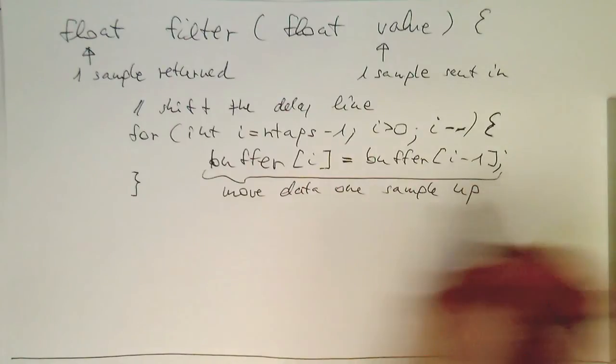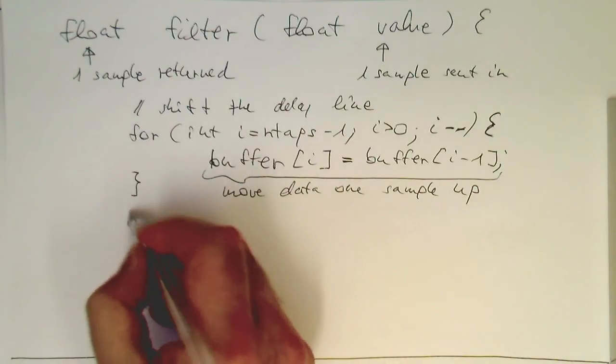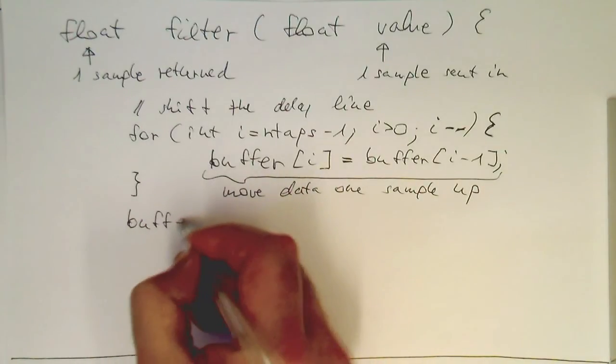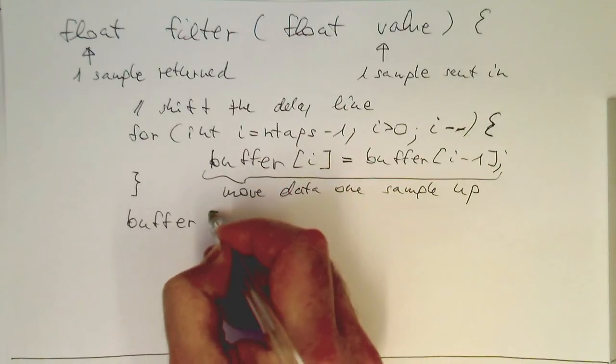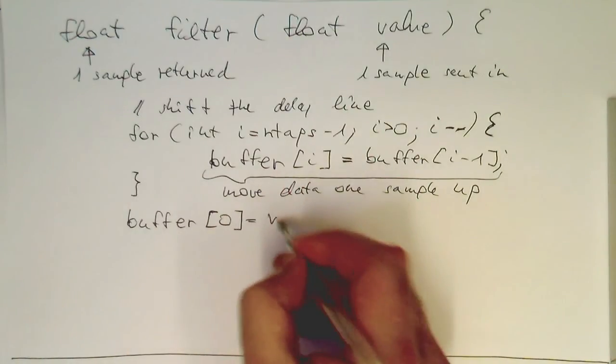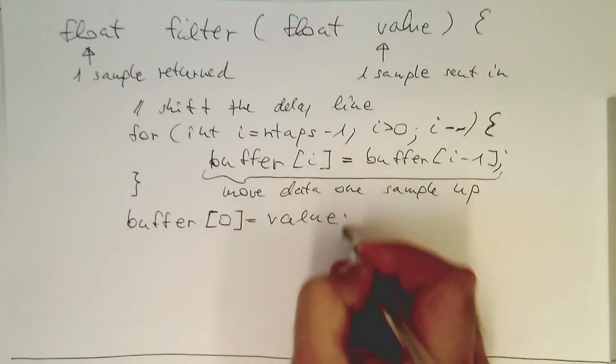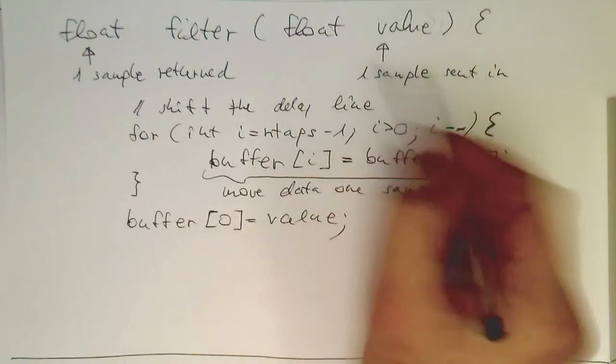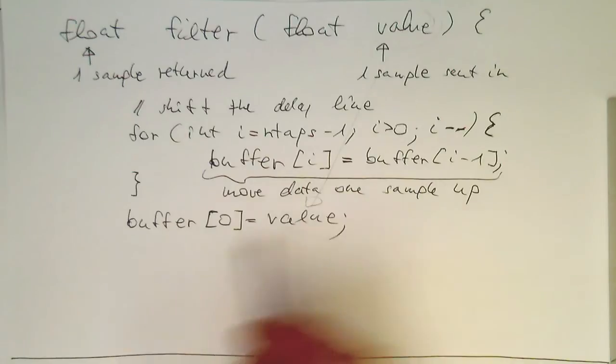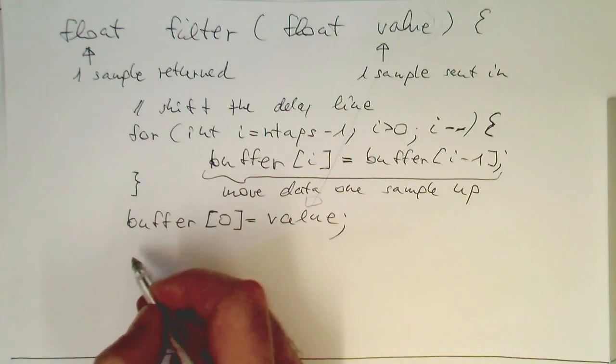So once we have done this, then we've got space in buffer of zero and there we put our new value in it. So that's our value here. This goes into here into our buffer, into our first delay step here. So once we've done this, we just need to calculate our weighted sum.